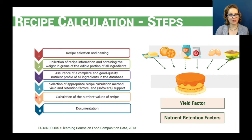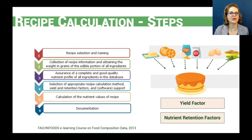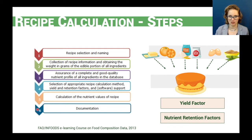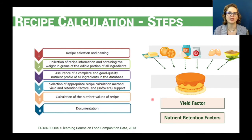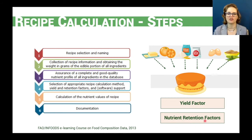After going through these first four steps, we can calculate the nutrient values of the recipe. It's extremely important that we make the documentation. In addition to the ingredient details, we need two key pieces of information: the yield factor and the nutrient retention factors.